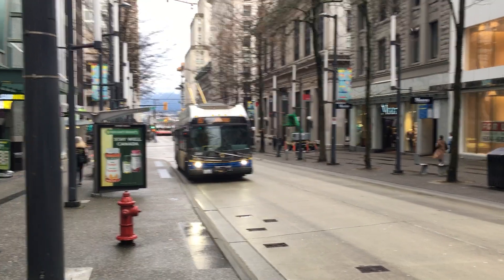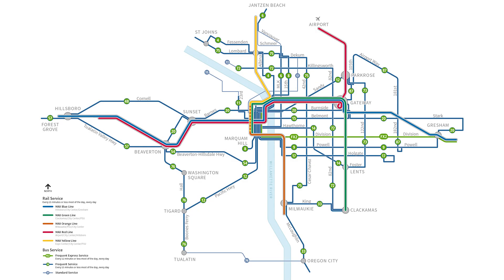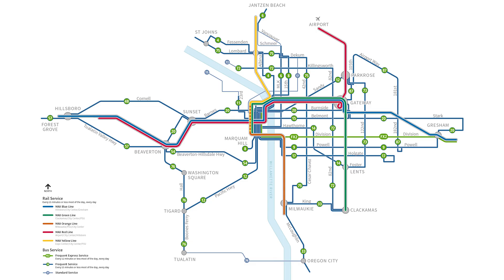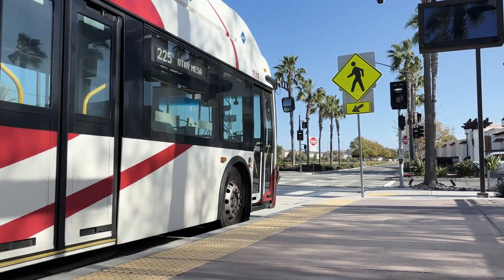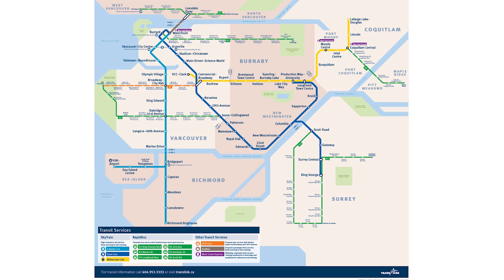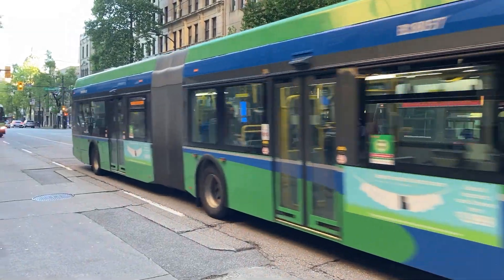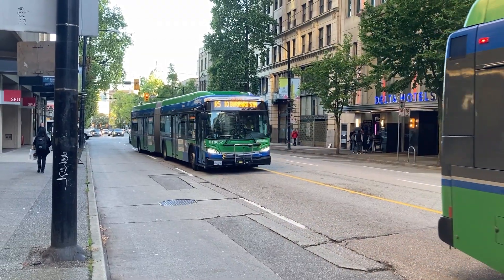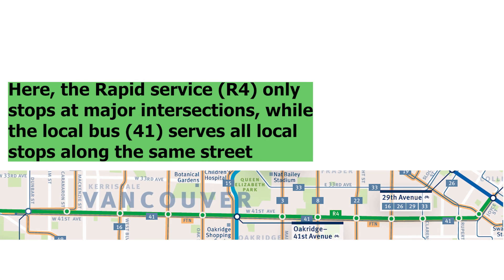Riders living near these frequent networks have access to a variety of important destinations without a long wait. The standard for high frequency varies by city — in San Francisco and Chicago it's 10 minutes, while it's 15 minutes in Vancouver and Portland. There is another step known as rapid service. While real-life rapid service varies wildly, many places set a standard of every 10 minutes or better, regardless of mode. This is the threshold where most riders won't look at a schedule and will simply head out to wait for the next departure. Rapid services also tend to have fewer stops, making them faster than local services.